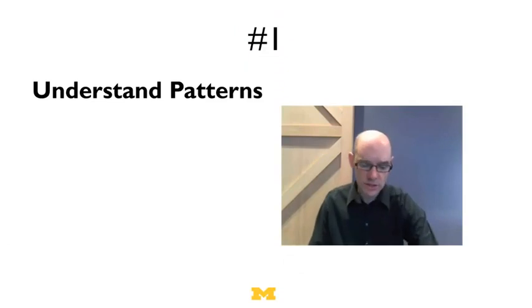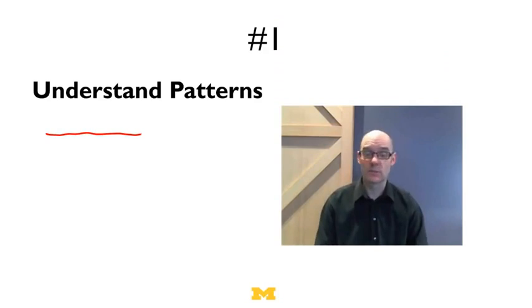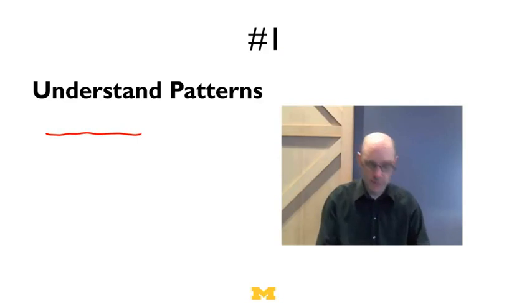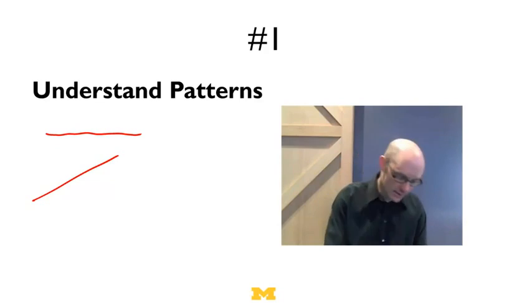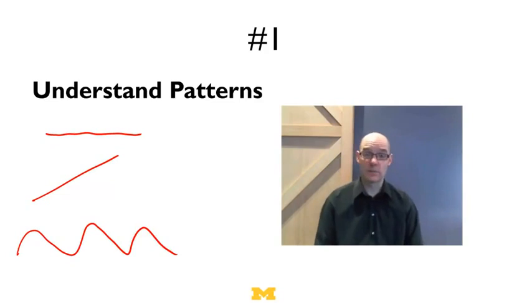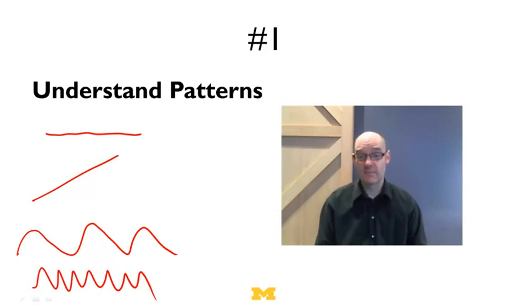The first reason is to understand some basic patterns in the data. You could look at data and it could just be a straight line and nothing could change. For example, if you look at a system and ask how much energy is in the system, we know that energy is neither lost nor gained, so energy is a constant, and we can have a model that explains why we see energy being a constant. Alternatively, you could see something that's just an increasing line, or patterns that go up and down slowly like business cycles, and we could have models that tell us why we see these cyclic curves. There's tons of data out there, and what we can do is use models to understand why we see those particular patterns.